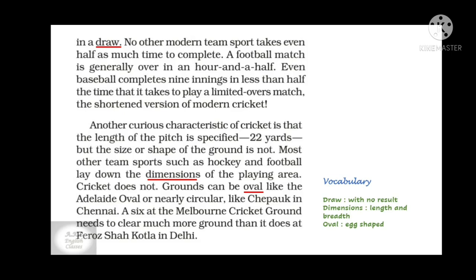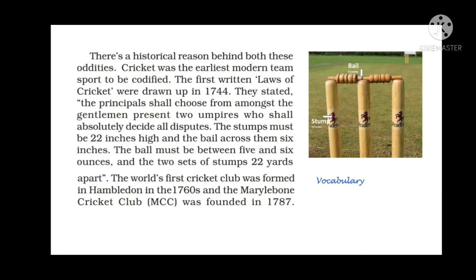There are two strange characteristics of cricket: a test match can go on for five days and still end in a draw, and the size and shape of the cricket ground is not specified. There is a historical reason behind both these oddities — oddities means strangeness. Cricket was the earliest modern team sport to be codified — codified means standardized or given rules and regulations. The first written laws of cricket were drawn up in 1744.